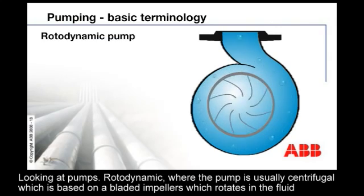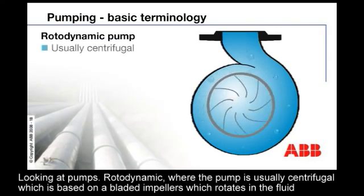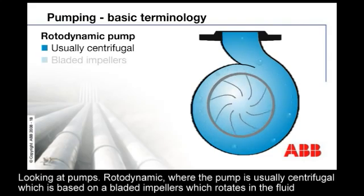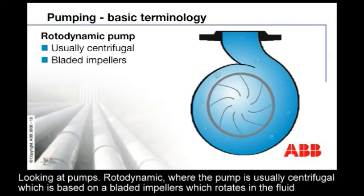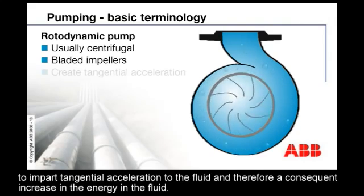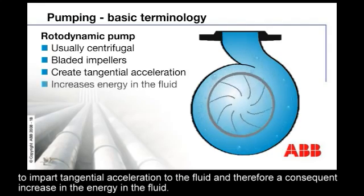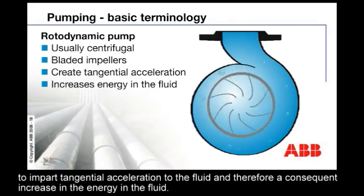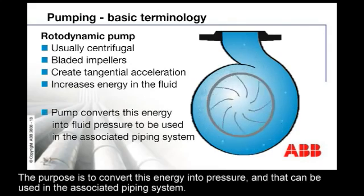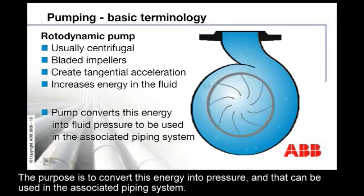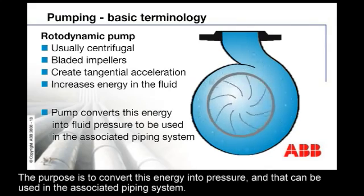Looking at pumps, the rotor dynamic, where the pump is usually centrifugal, it's based on a bladed impeller which rotates in the fluid to impart a tangential acceleration to the fluid and therefore a consequent increase in the energy in the fluid. The purpose is to convert this energy into pressure, and that can be used in the associated piping system.